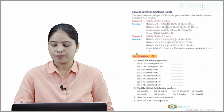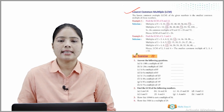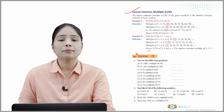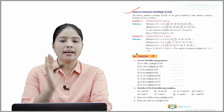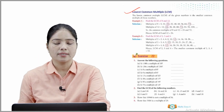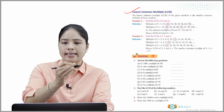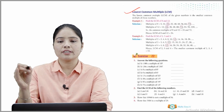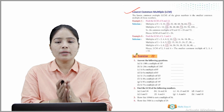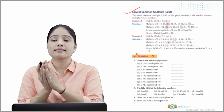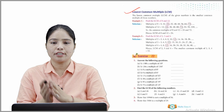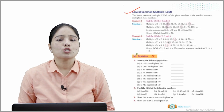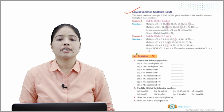Now move on to Lowest Common Multiple, which is LCM. The LCM of given numbers is the smallest common multiple of those numbers. Example 1: Find the LCM of 8 and 12. Multiples of 8: 8, 16, 24, 32 and so on. Multiples of 12: 12, 24, 36, 48, 60 and so on. The common multiples of 8 and 12 are 24, 72, etc. Hence, the LCM of 8 and 12 is 24.